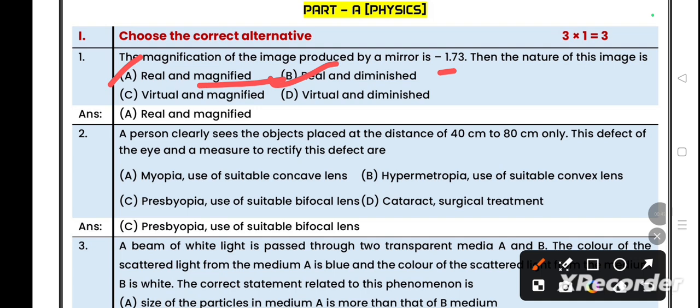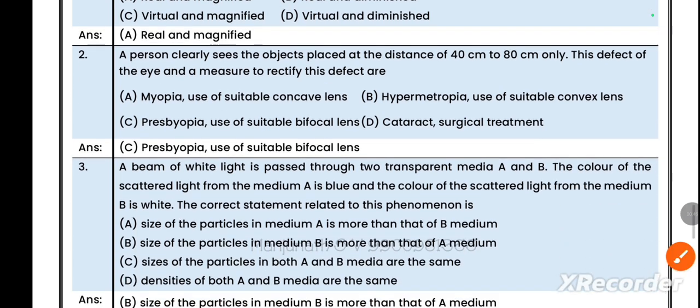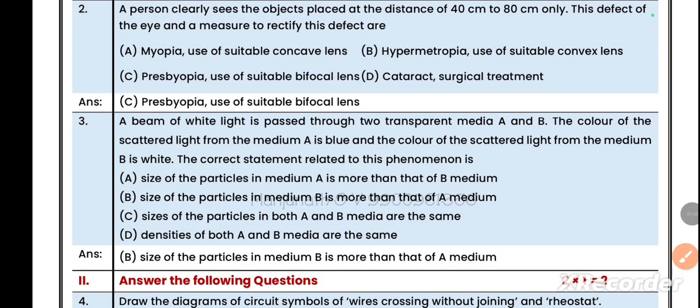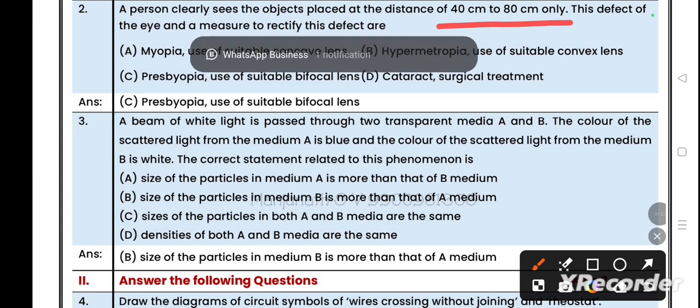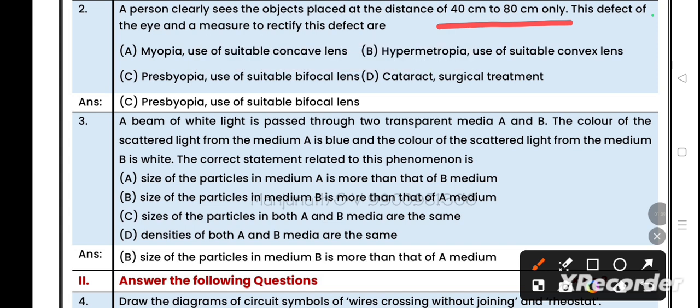Question number two: a person clearly sees objects placed at a distance of 40 centimeter to 80 centimeter only. If a person can see 40 to 80 centimeter, he cannot see objects below 40 centimeter and above 80 centimeter. He is suffering from long-sightedness and short-sightedness both. To correct this disease, we use a suitable bifocal lens. This disease is called presbyopia. Option C, right answer.